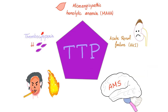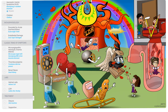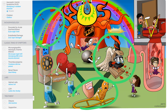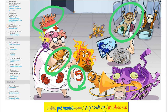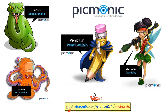TTP, on the other hand, presents with a pentad: microangiopathic hemolytic anemia, thrombocytopenia, acute renal failure, fever, and neurological symptoms. Remember, acute renal failure is rare in TTP. For HUS, the triad is microangiopathic hemolytic anemia, thrombocytopenia, and renal failure — treatment is supportive with fluids, electrolytes, and dialysis if severe. For TTP, we have a problem with ADAMTS-13 and a pentad of five symptoms.